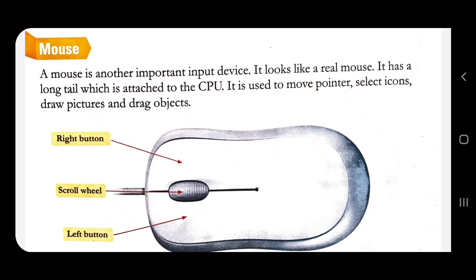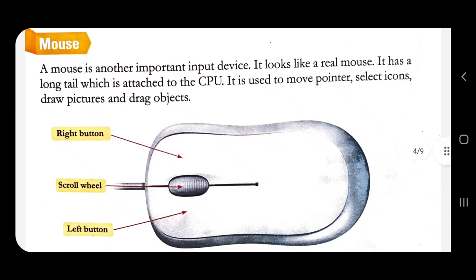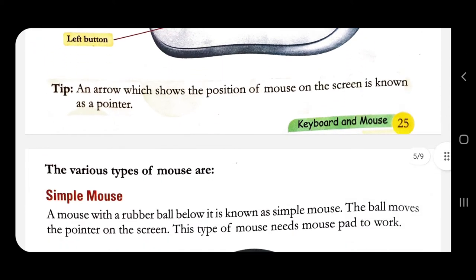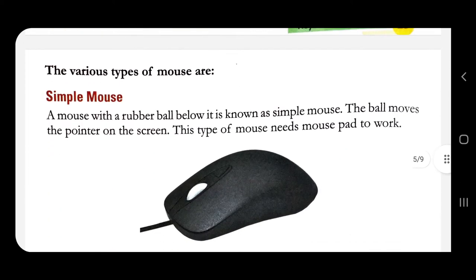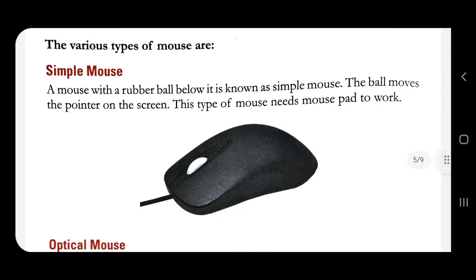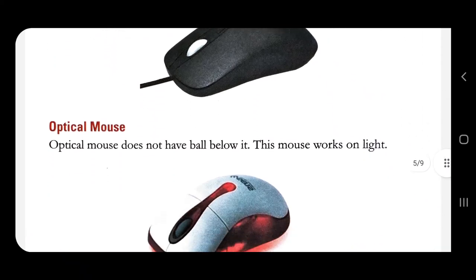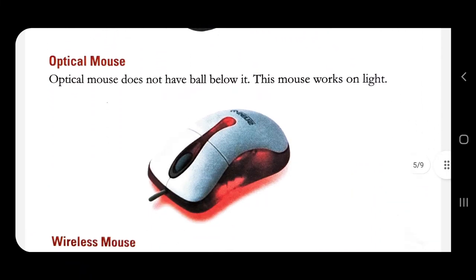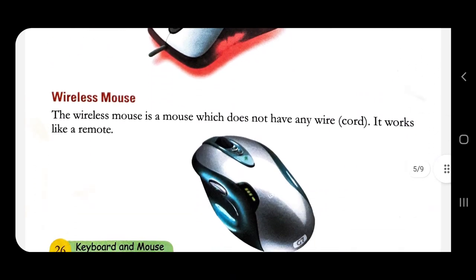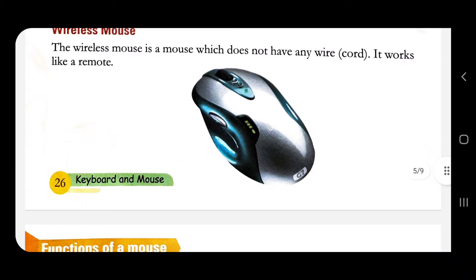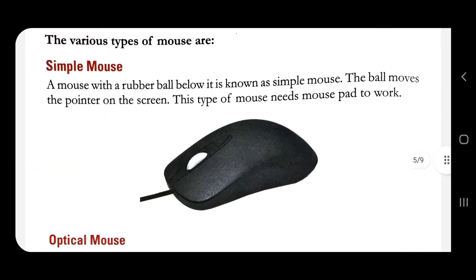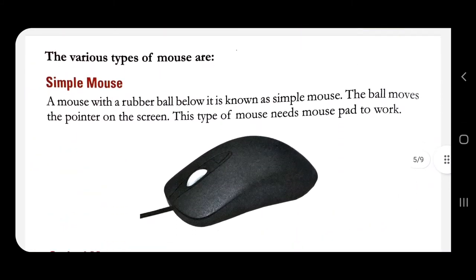Now let's learn about the types of mouse. We have three types of mouse: simple mouse, optical mouse, and wireless mouse. Let's learn about them one by one.